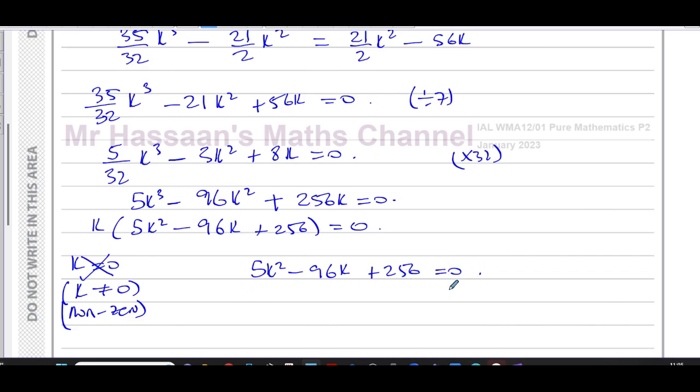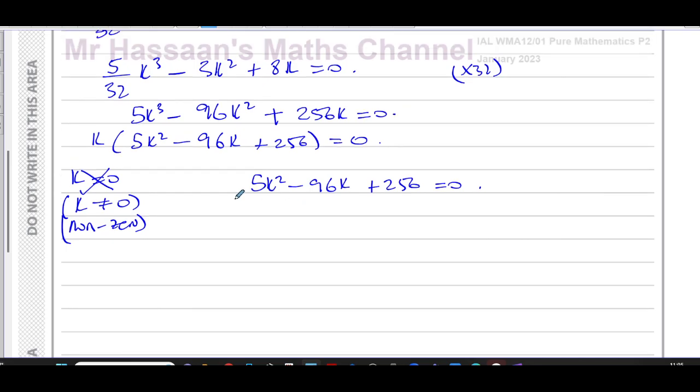But I can use this equation here, 5k squared minus 96k plus 256 equals zero. Does this factorize? Well, I'm not going to fluff around and try and find out because it's a bit complicated. I can't take any common factors. You've got to find two numbers multiplied to give you the same as this times that, and it's too much hassle. So what I'm going to do is I'm just going to use a quadratic formula, which makes life a lot easier for us.